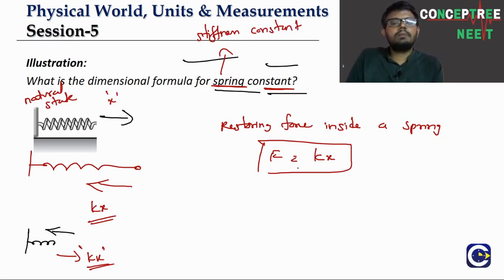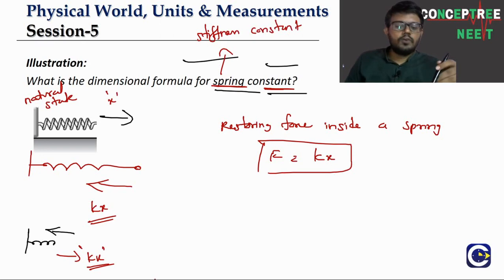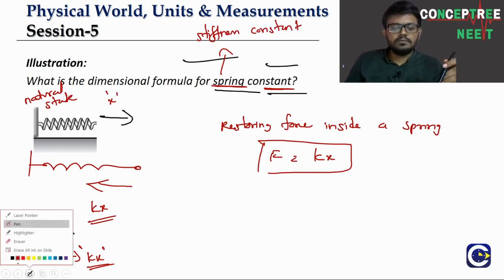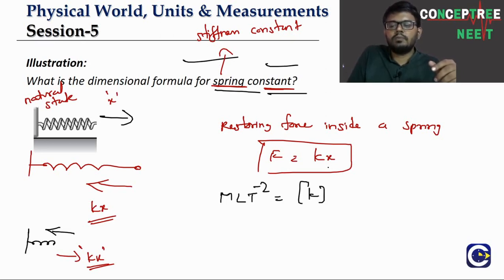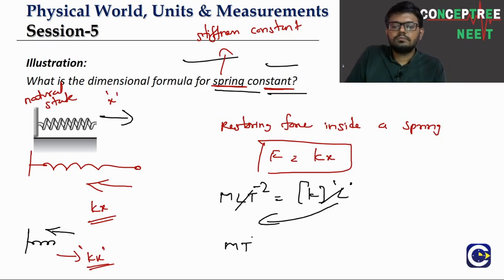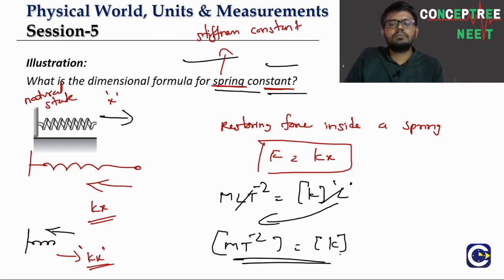The spring constant value depends upon the particular spring. Using the formula F = kx: [F] = [k][x], so M L T⁻² = [k] × L, giving [k] = M T⁻². This is the dimensional formula for the spring constant.